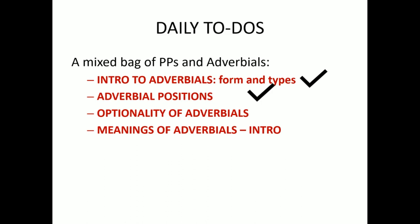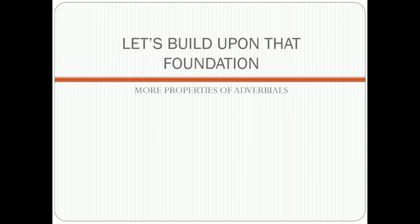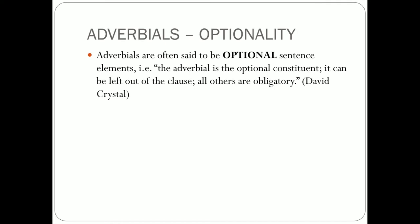The next section is really short — the optionality of adverbials. We now know that adverbials have many forms and can appear in seven different positions. But we didn't address the elephant in the room: the very common conception that adverbials are optional. Generally speaking, even great linguists like David Crystal make sweeping statements that the adverbial is the optional constituent — it can be left out, all others are obligatory. The problem with one-size-fits-all solutions is that there is no size that fits all.